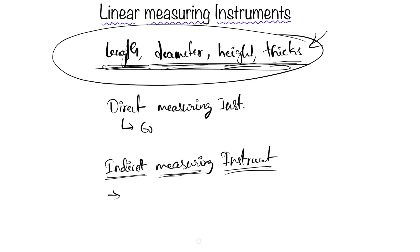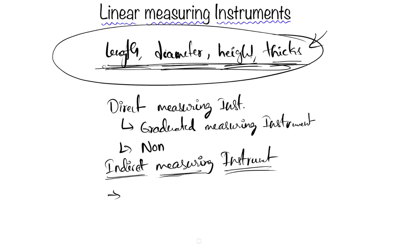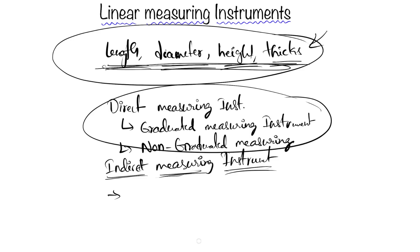Within direct measuring instruments, we have two types: graduated measuring instruments and non-graduated measuring instruments. In this tutorial we are going to focus on direct measuring instruments only, because these are the mechanical means. Optical measuring instruments will be covered separately, so we are focusing on direct measuring instruments only.